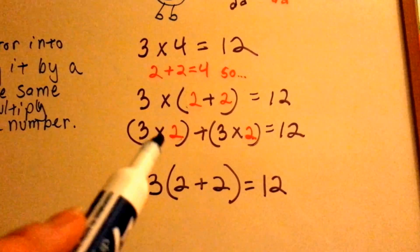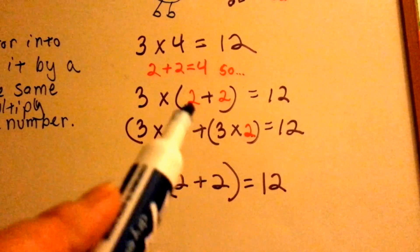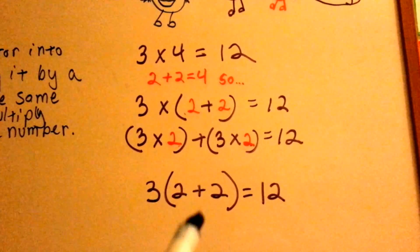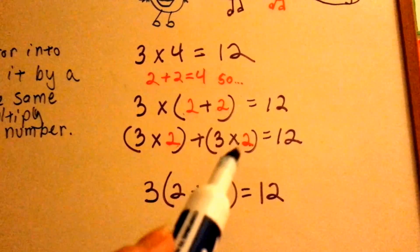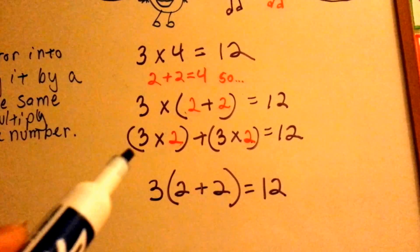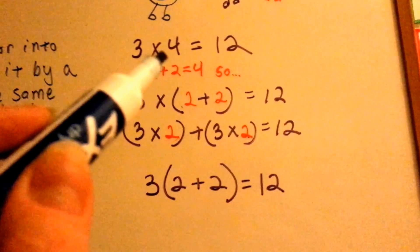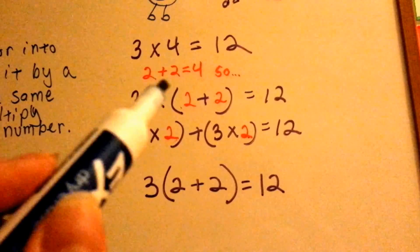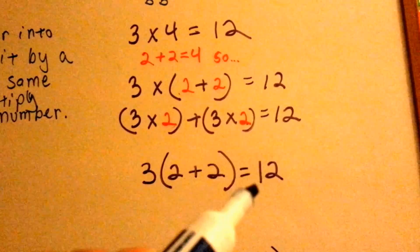Then you say 3 times 2 plus 2. Or, you could say 3 times 2 plus 3 times 2. The distributive property of multiplication says you're going to get the same answer, whether you do it this way or this way. You're splitting up one of the factors into add-ins. But the answer will still be the same.